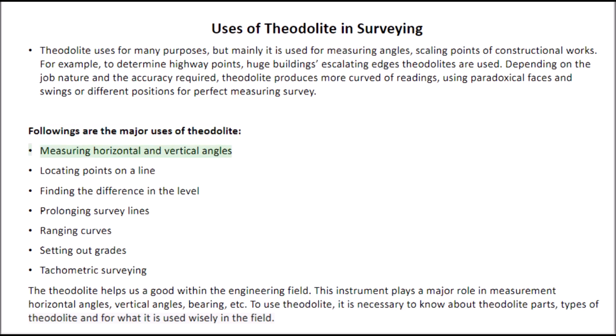Measuring horizontal and vertical angles. Locating points on a line. Finding the difference in level. Prolonging survey lines. Ranging curves. Setting out grades. Tachometric surveying. The theodolite plays a major role in measurement of horizontal angles, vertical angles, bearing, etc. To use the theodolite, it is necessary to know about its parts and types.